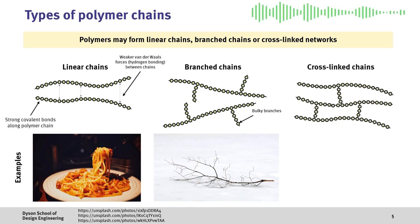Finally, we have cross-linked chains, where individual polymer chains are connected to each other with strong covalent bonds.